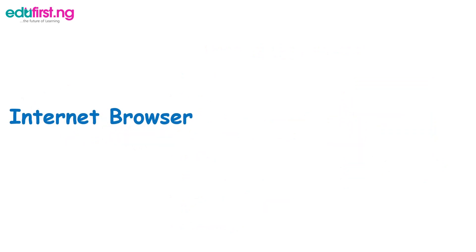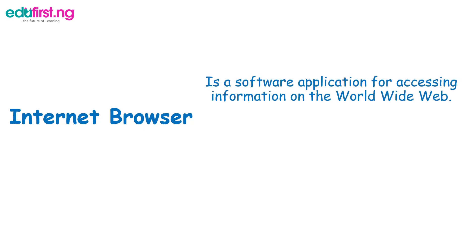We can appreciate the use of the Internet through a particular software called the Internet Browser. The Internet Browser is a software application for accessing information on the World Wide Web. When we say the World Wide Web, we are saying it's a centralized ecosystem — a platform where millions of computers are connected together for the purpose of transferring and sharing of information.